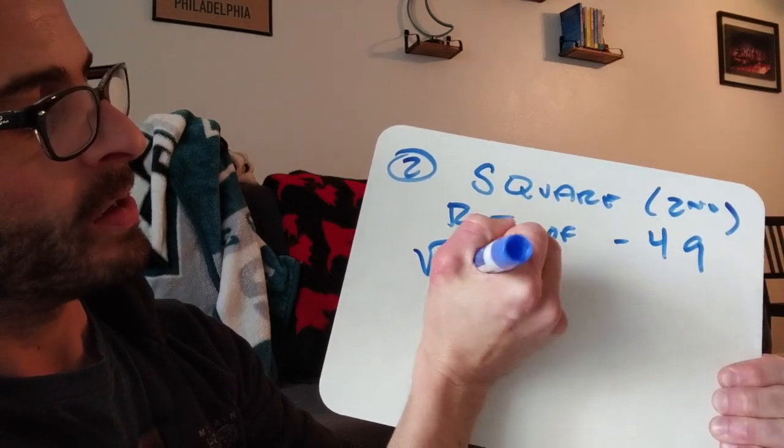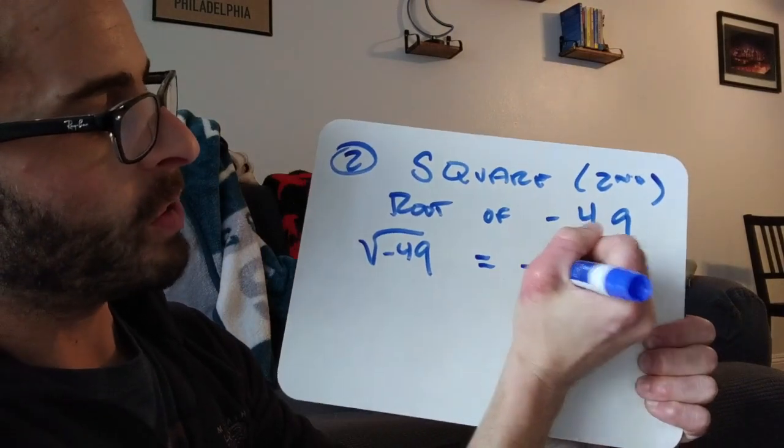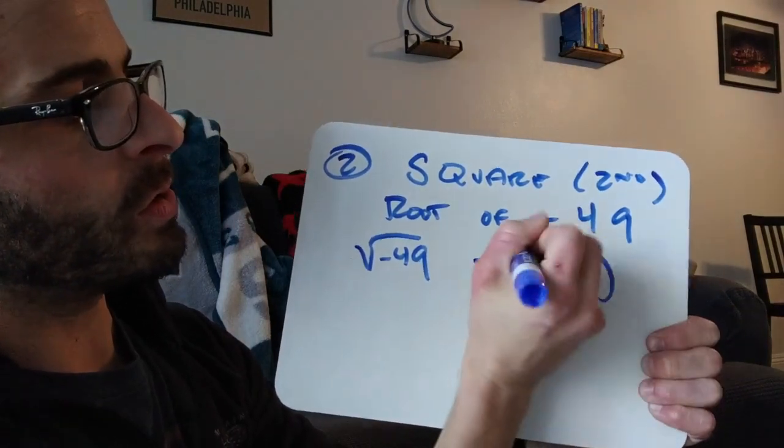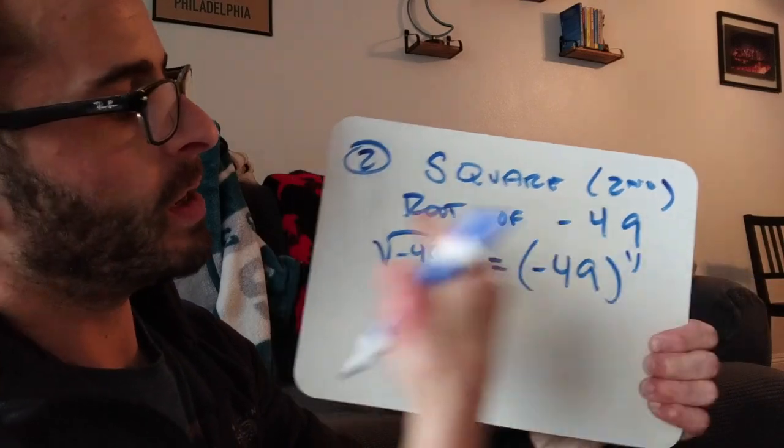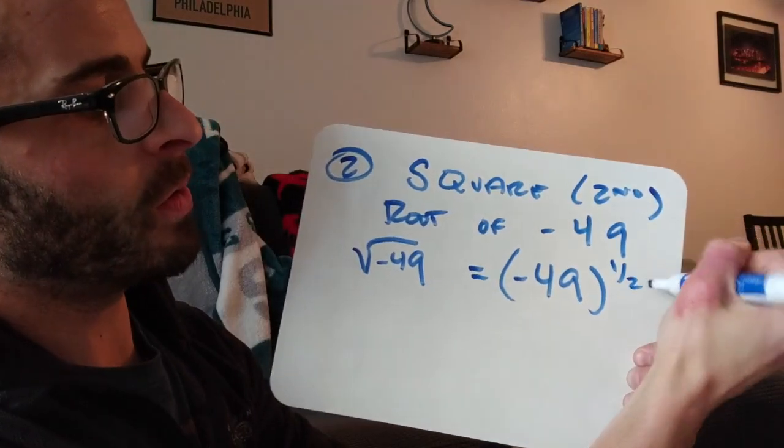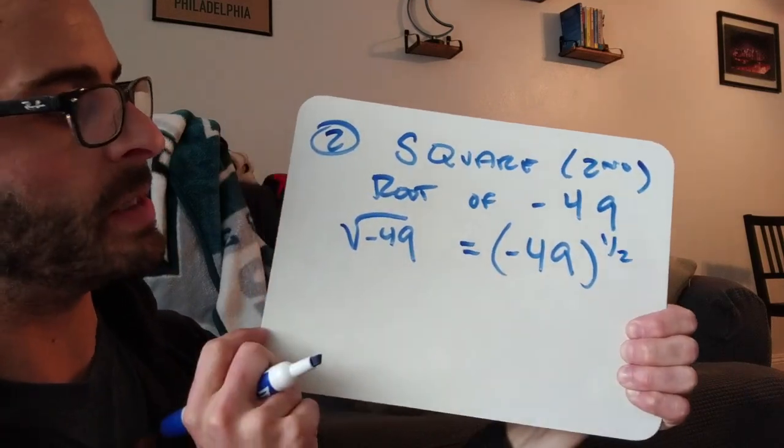So we're asked to find the square root of negative 49. You've totally seen that before, but you might not have seen this. Make sure you use parentheses when there's a negative. Now, square root is second root, so the second is in the denominator of the exponent. So this is the same as that.